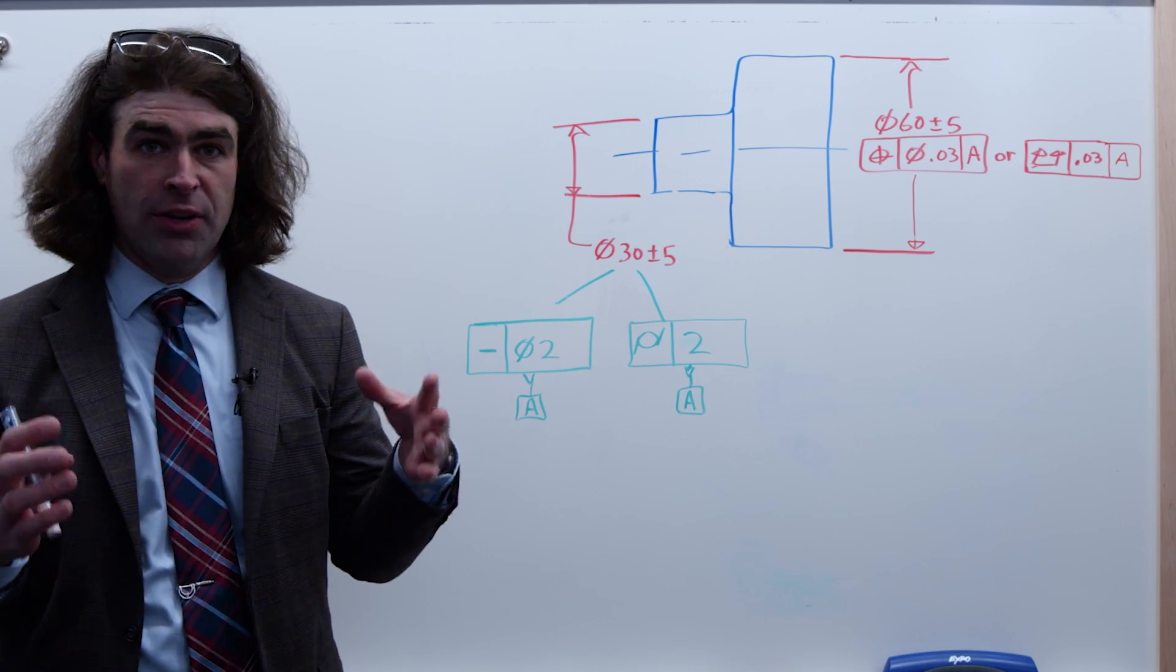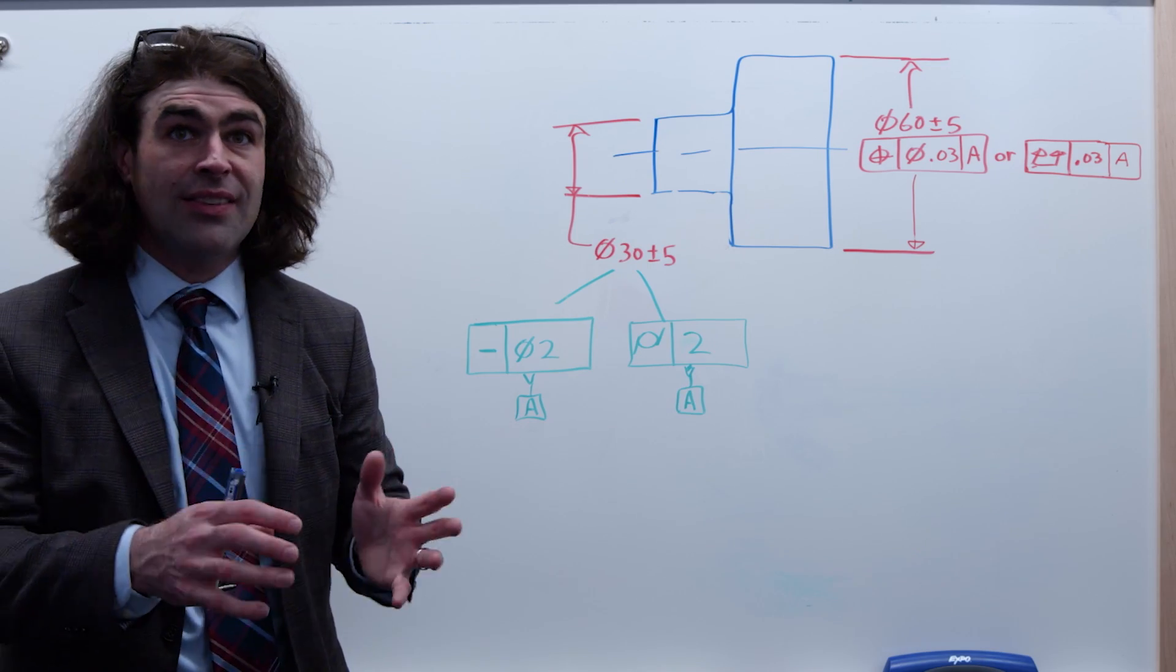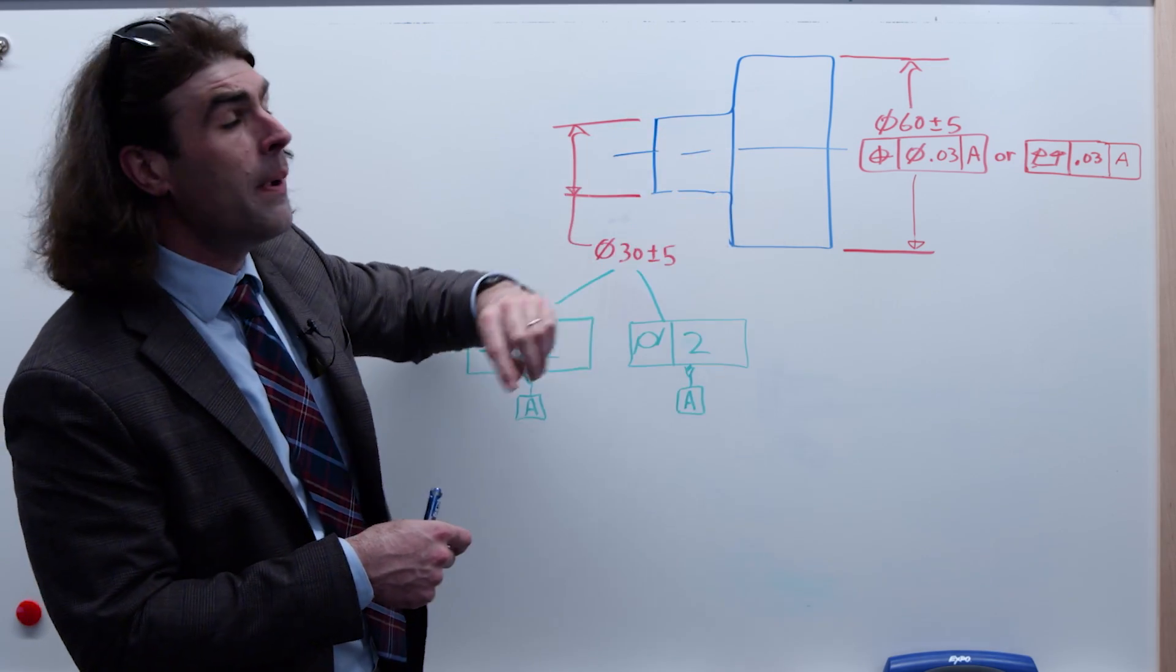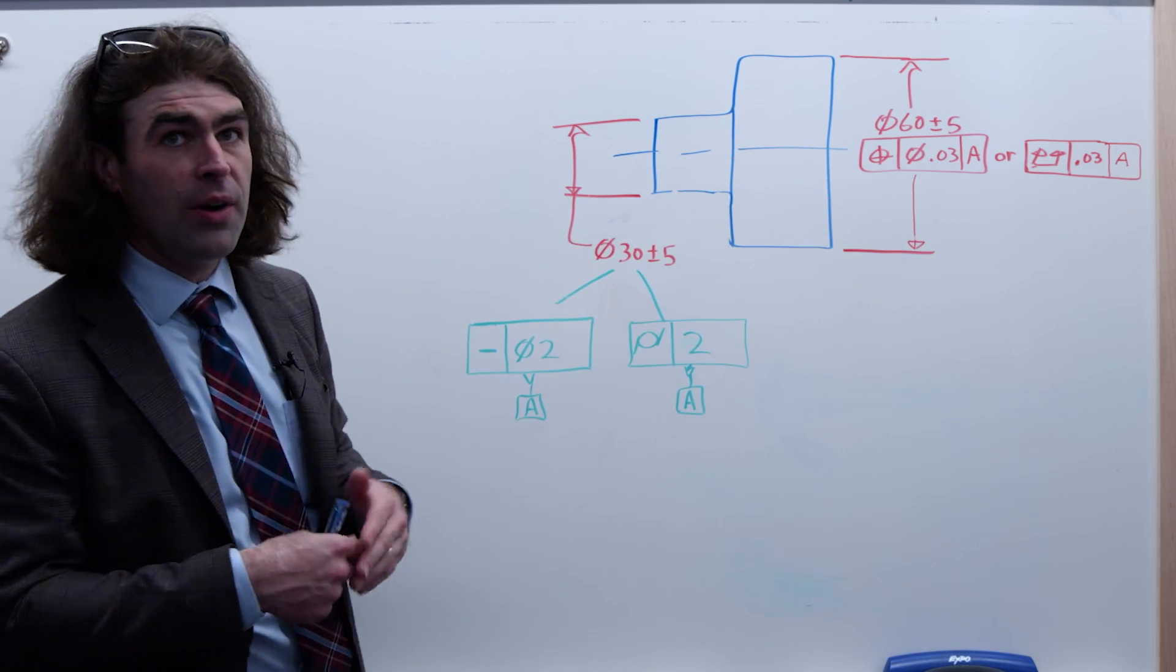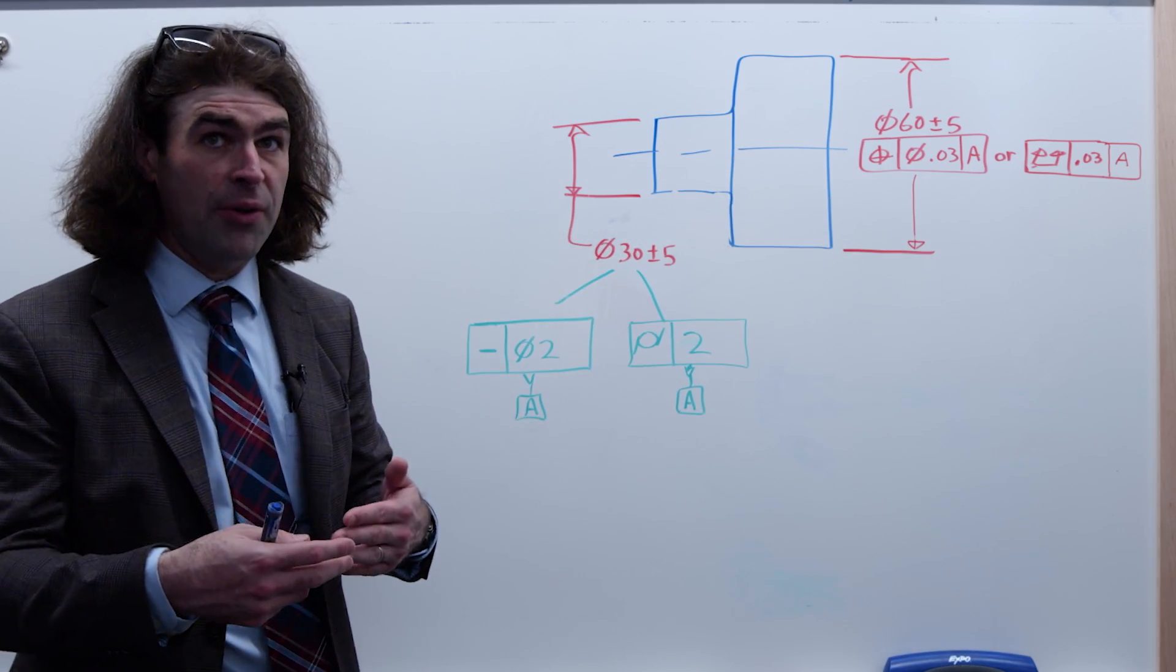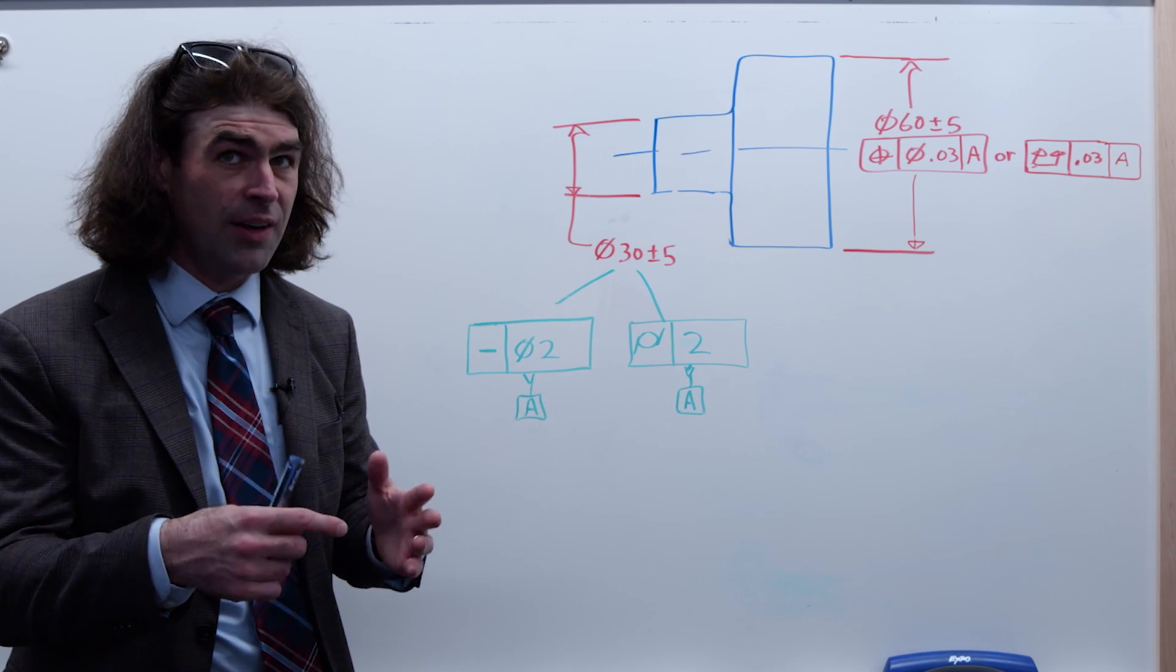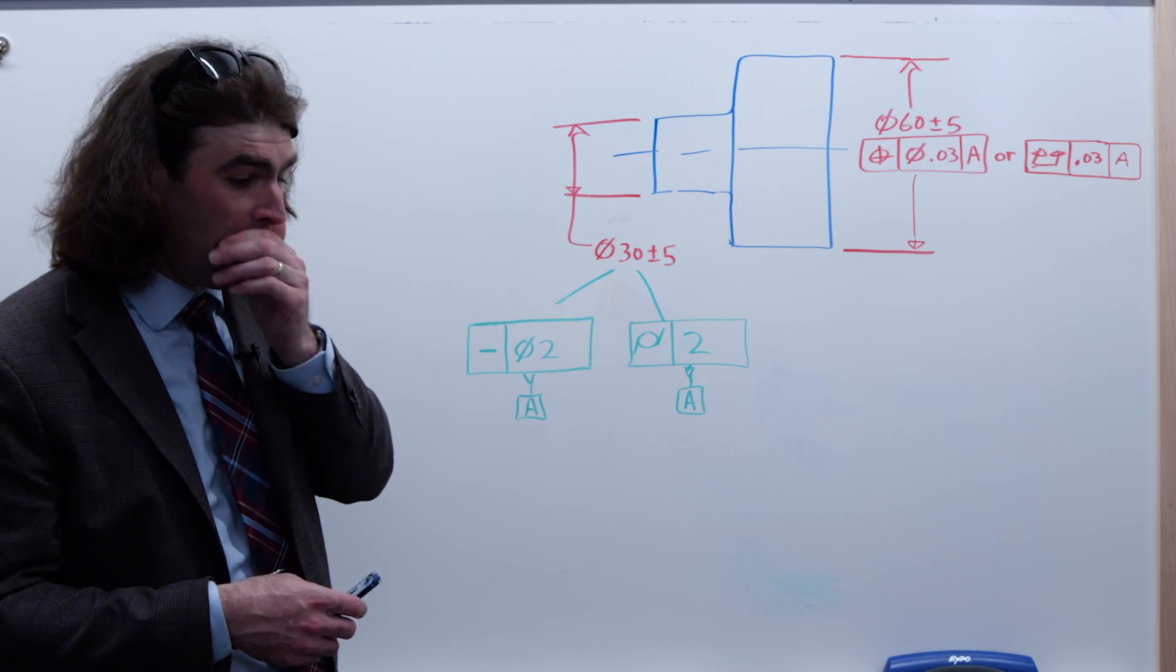However we grab it with a chuck or collet or a v-block if we have to to stabilize it, we're considering this axis. With something like run out, the axis of the feature is what we're spinning around, not the surface of the feature. I know that sounds weird, you know, physically you're touching the surface, but it's the axis you're spinning around.